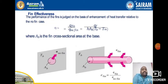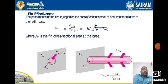The next concept is fin effectiveness. Fin effectiveness can be judged based on the enhancement of heat transfer. It is defined as εf = Qfin / Qno-fin = Qf / (H·AB·(TB − T∞)), where AB is the fin cross-sectional area at the base. We compare the heat transfer rate with fin and without fin to determine the effectiveness.